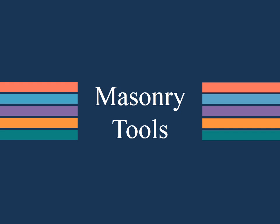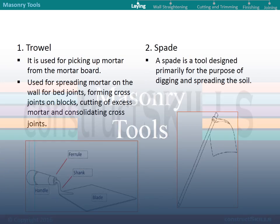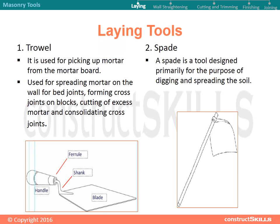Masonry laying tools. The trowel is used for picking up mortar from the mortar board, spreading mortar on the wall for bed joints, and forming cross joints on blocks.